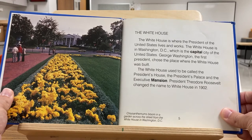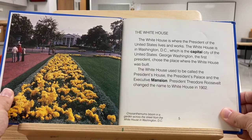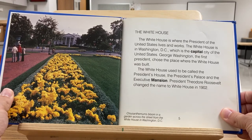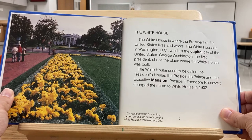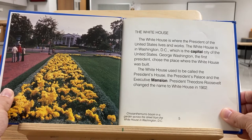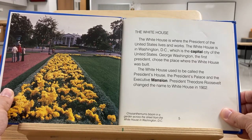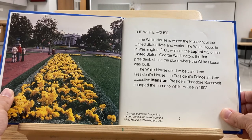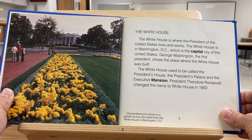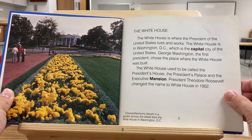The White House is where the President of the United States lives and works. The White House is in Washington DC, which is the capital city of the United States. George Washington, the first president, chose the place where it was built. The White House used to be called the President's House, the President's Palace, and the Executive Mansion. President Theodore Roosevelt changed the name to White House in 1902.